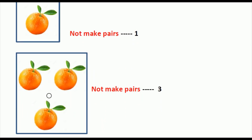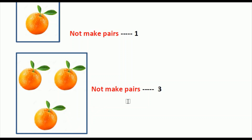Now look at this picture. Do the oranges make a pair here? No, here one is left — one is extra. So we can say that they do not make pairs. In this picture the oranges are not making a pair.